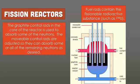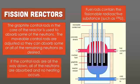The graphite control rods in the core of the reactor are used to absorb some of the neutrons. The movable control rods are adjusted so that they can absorb some or all of the remaining neutrons as desired. We call these control rods because they are able to control the amount of neutrons in the system, which controls the amount of fission reactions that actually occur, which controls the amount of energy you produce. If your control rods inside your reactor are all the way down, all the neutrons are being absorbed and there'll be no heat occurring. And a nuclear bomb does not have control rods, which is why it just keeps going.